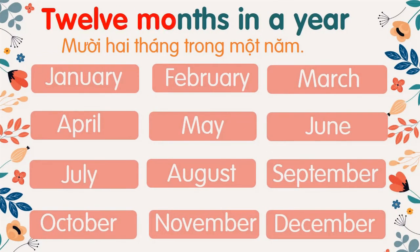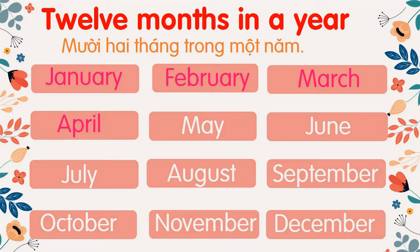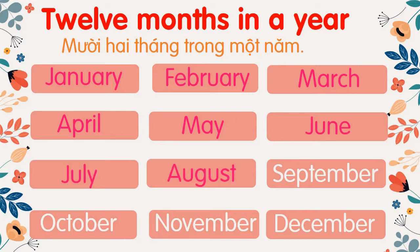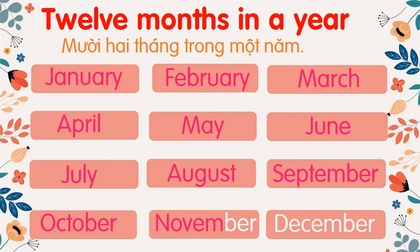There are twelve months in a year: January, February, March, April, May, June, July, August, September, October, November, December.